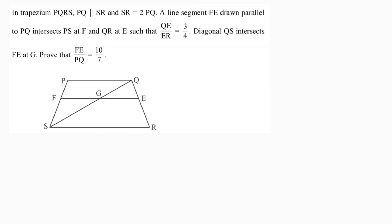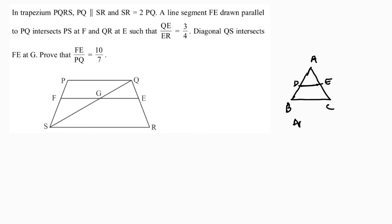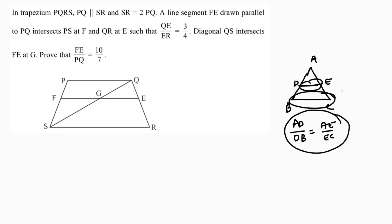To solve this problem, remember that we need to find FE, so first find FG and GE, then add them. Some students have confusion whether to use BPT or similarity. In triangle ABC, if the question asks only about AD, DB, AE, and EC, use BPT. But if they give the length or ask about DE and BC, we need to go for similar triangles.